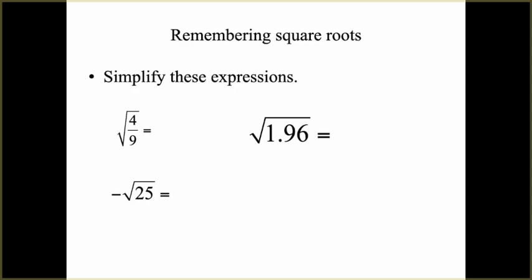First, let's go back and remember some stuff we learned about square roots. When we were simplifying expressions, when we have a fraction completely under the radical — for example, the square root of 4 ninths — we could rewrite this as the square root of 4 over the square root of 9, and we get 2 over 3. You can skip that middle step and go right to two-thirds, understanding you can take the square root of both the numerator and the denominator.